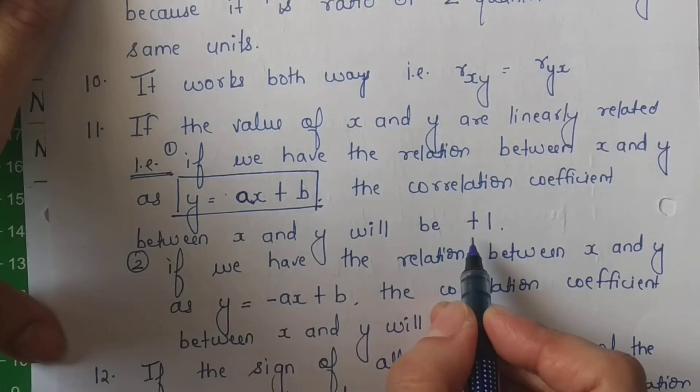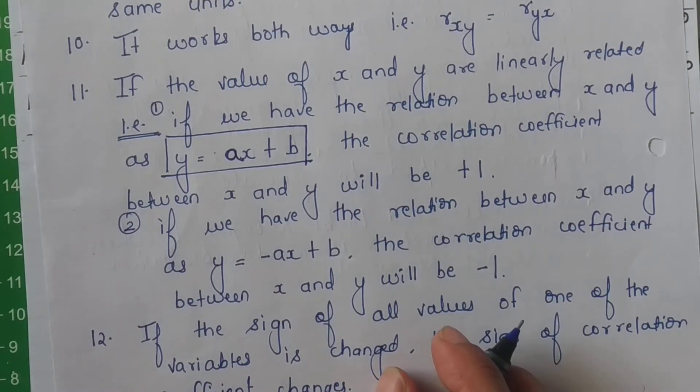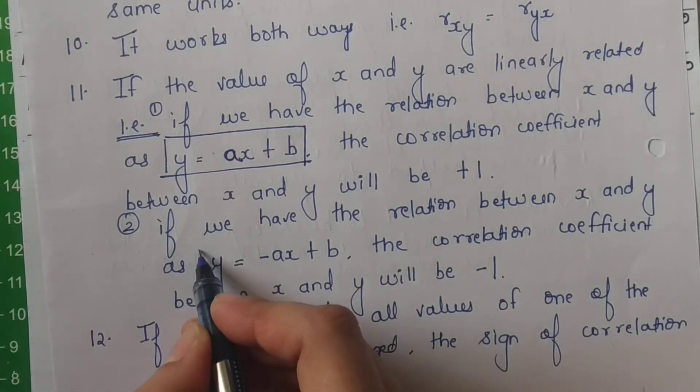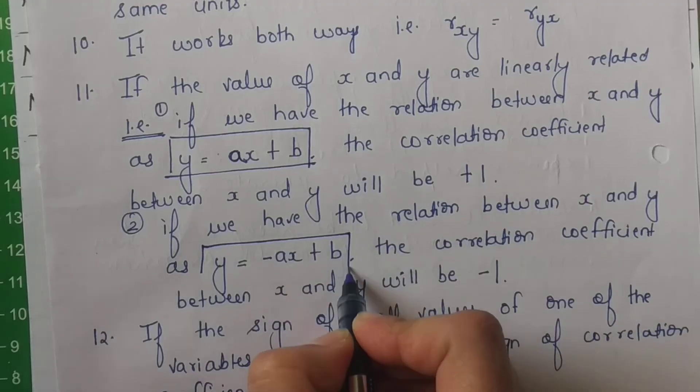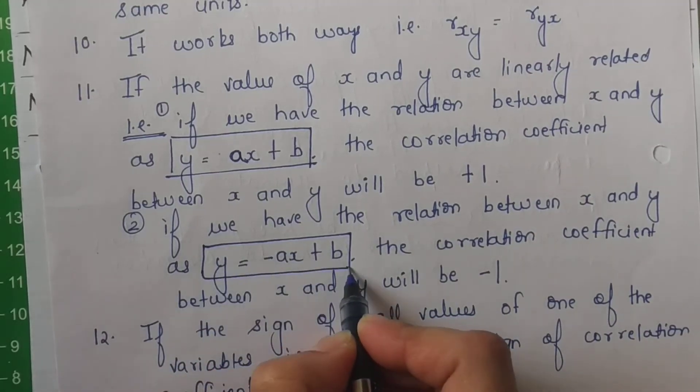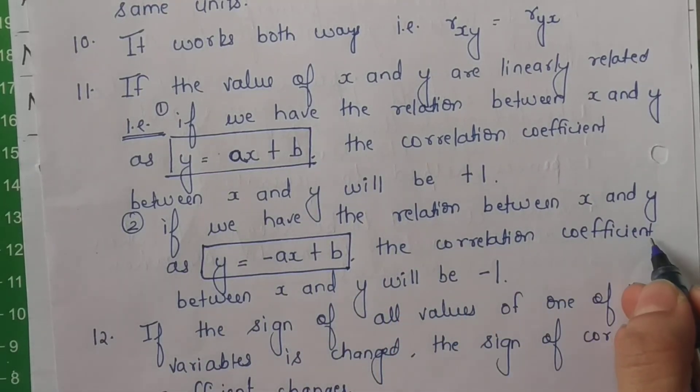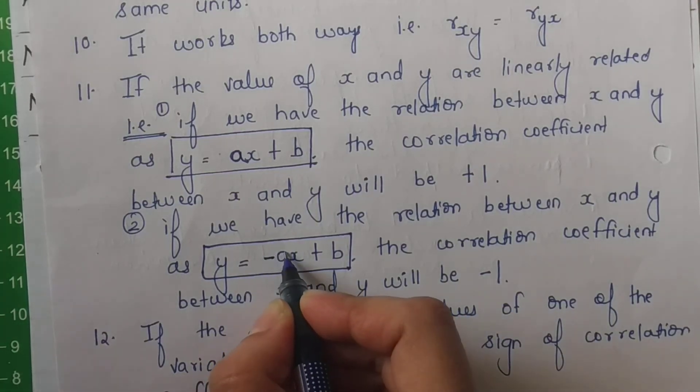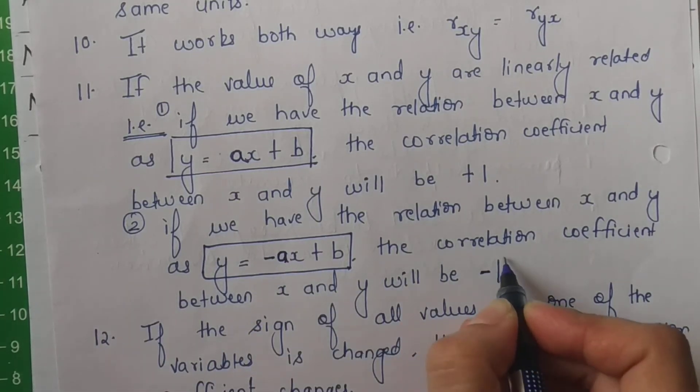If we have the relationship between x and y as minus ax plus b. Agar in ke beech ka rishta ki jo equation hai, if it is expressed as minus ax plus b, the correlation coefficient between x and y in that case will be, since this is minus a, so it will be minus 1.